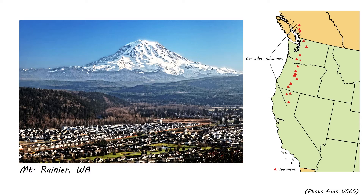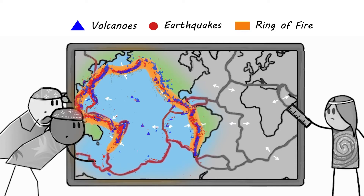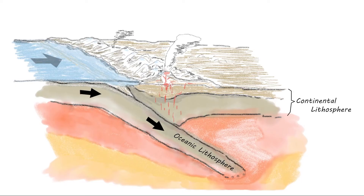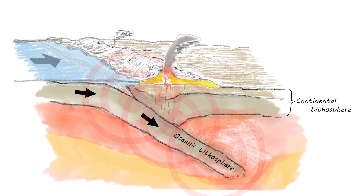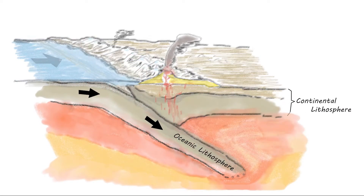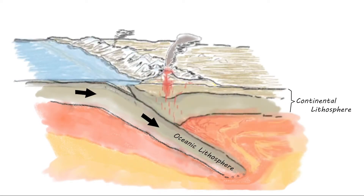Convergent margins subducting oceanic crust are especially important around the Pacific Ocean, and the many volcanoes associated with these are part of what is called the Ring of Fire. Regions around convergent plate margins can be dangerous because of the strong earthquakes and violent volcanic eruptions.